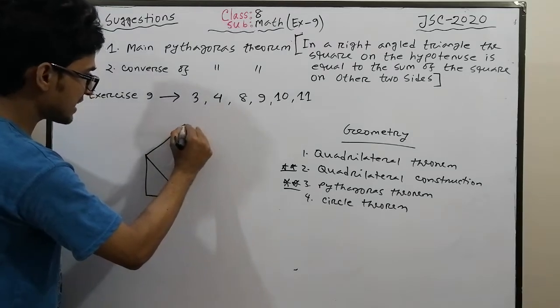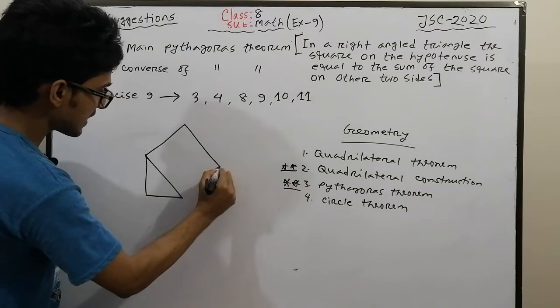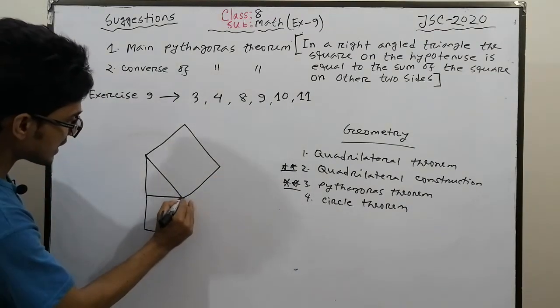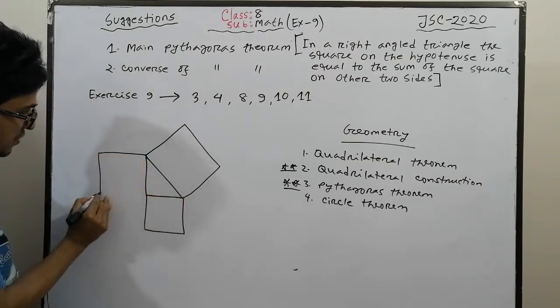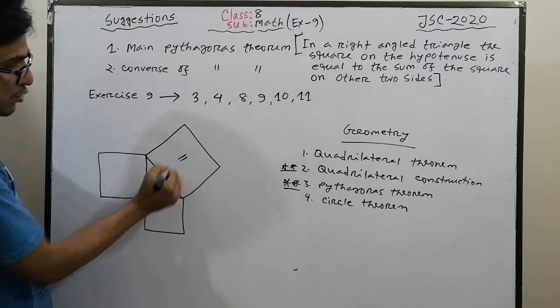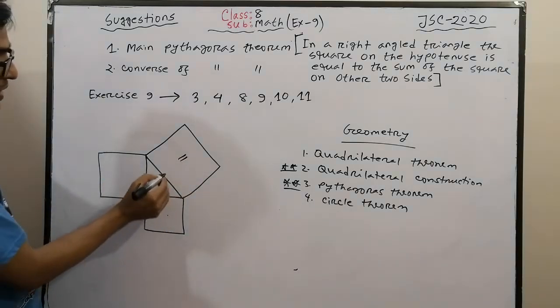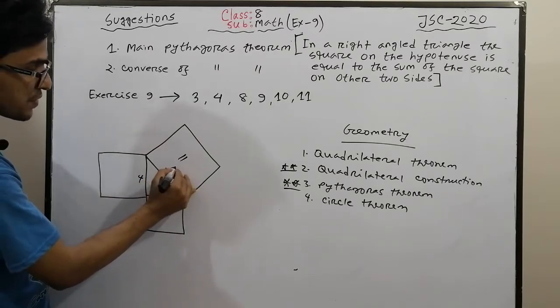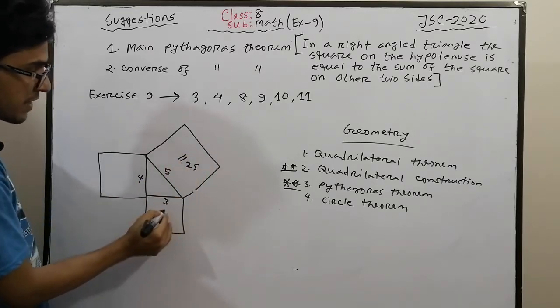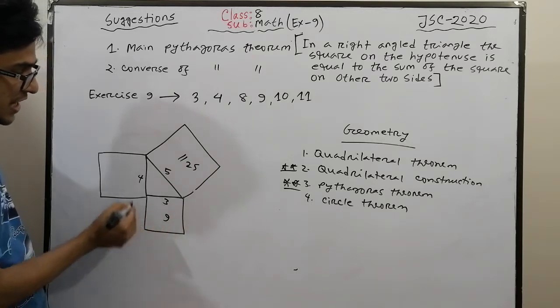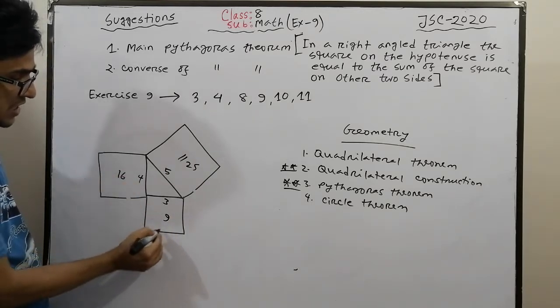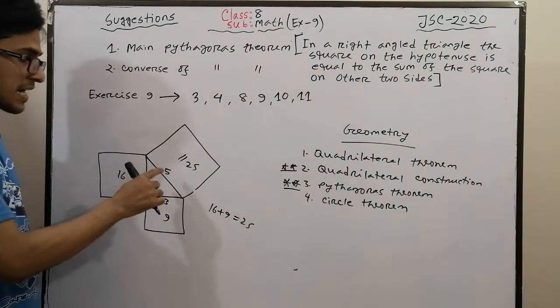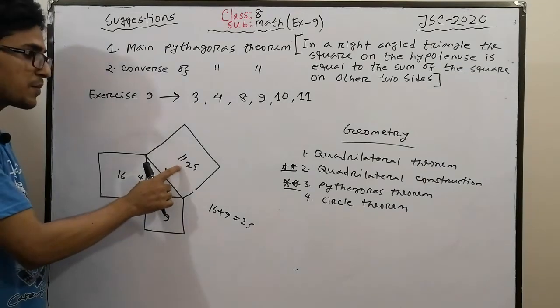Let me show you an example. If you draw a right-angled triangle, let's say one side is 5, another is 3, and another is 4. Then the area calculation: 5 squared equals 25, 3 squared equals 9, and 4 squared equals 16. So 16 plus 9 equals 25.